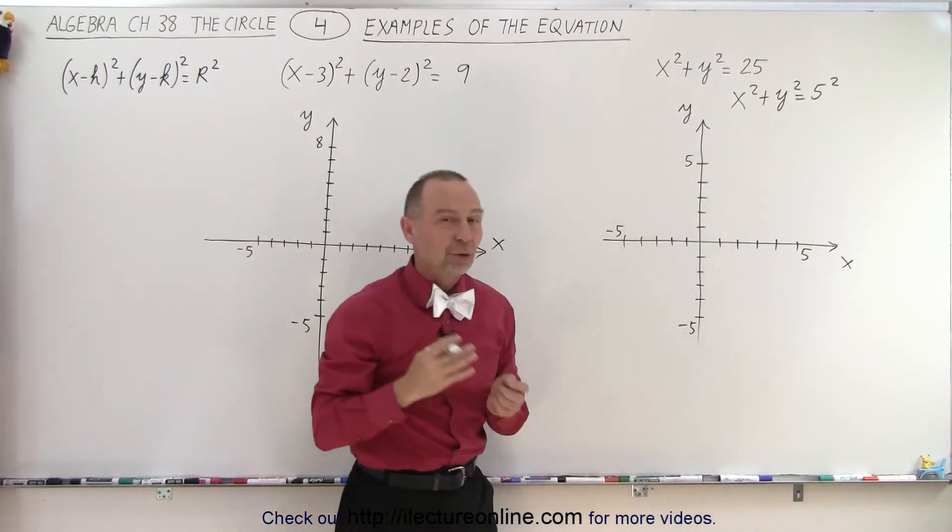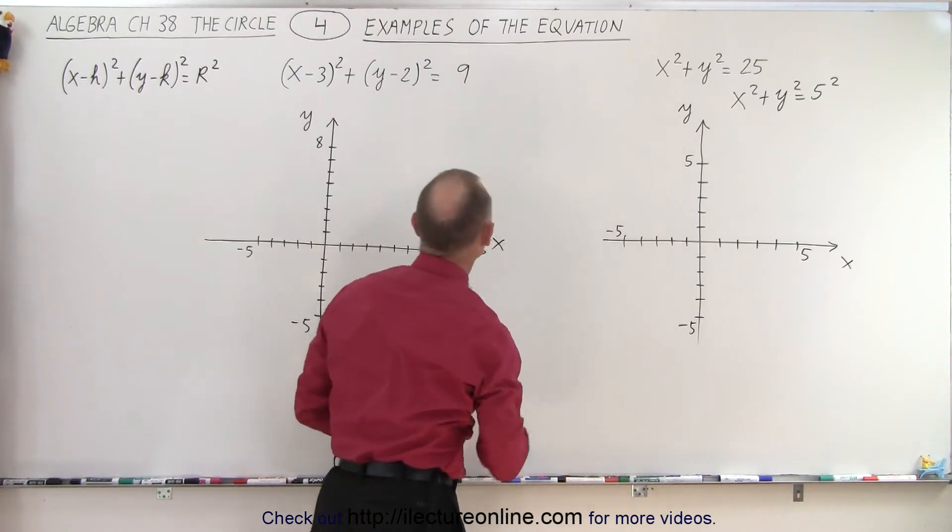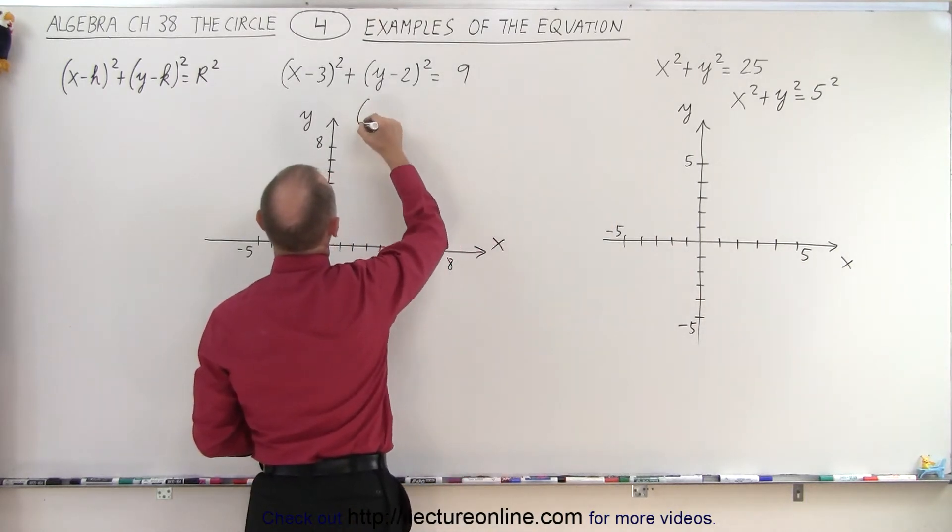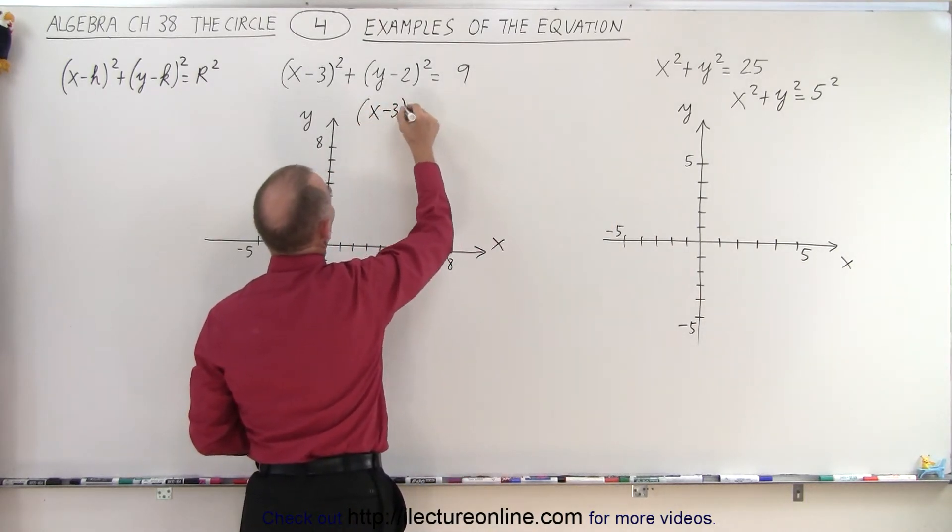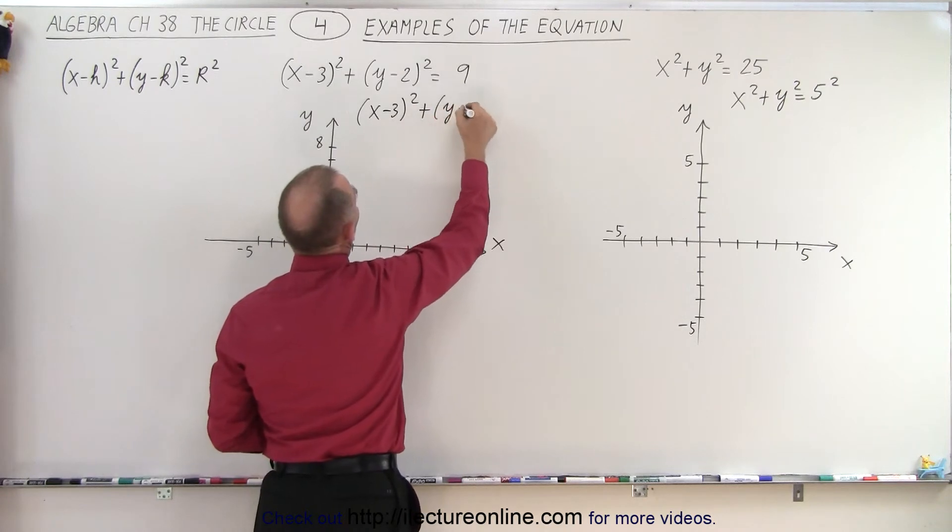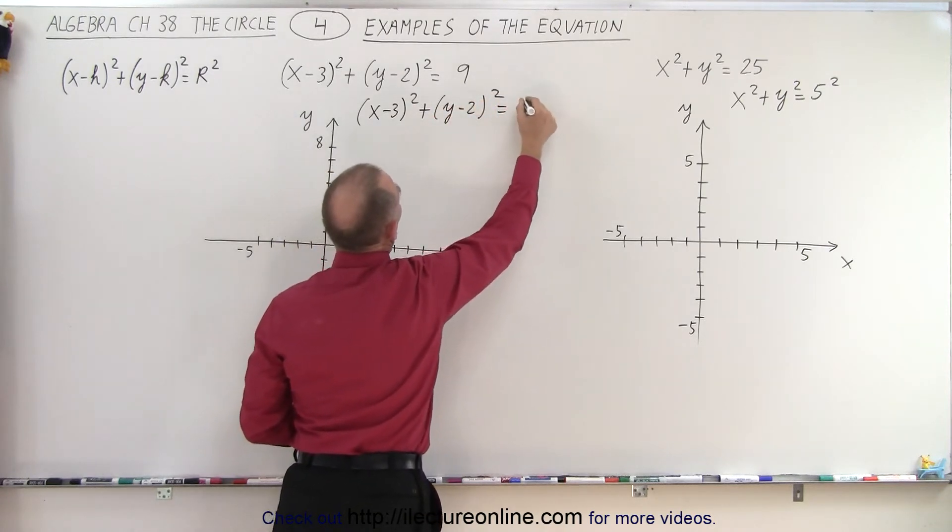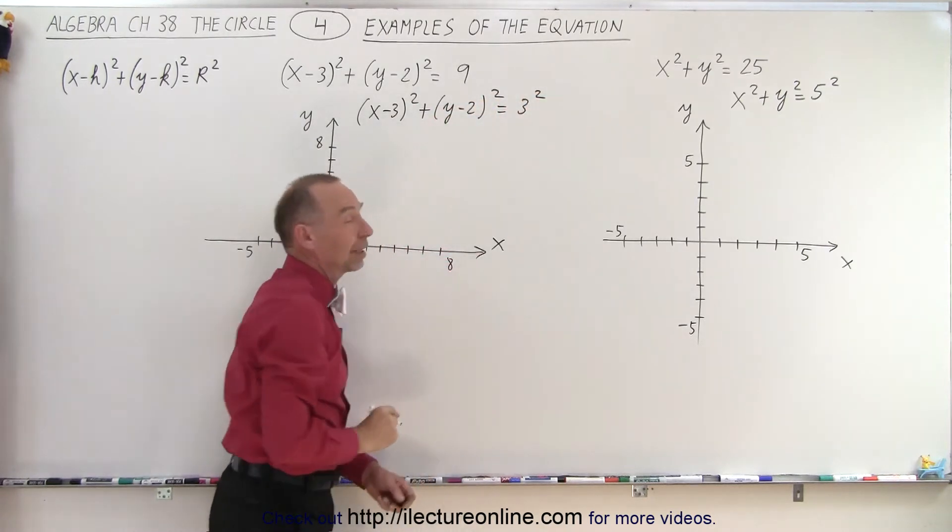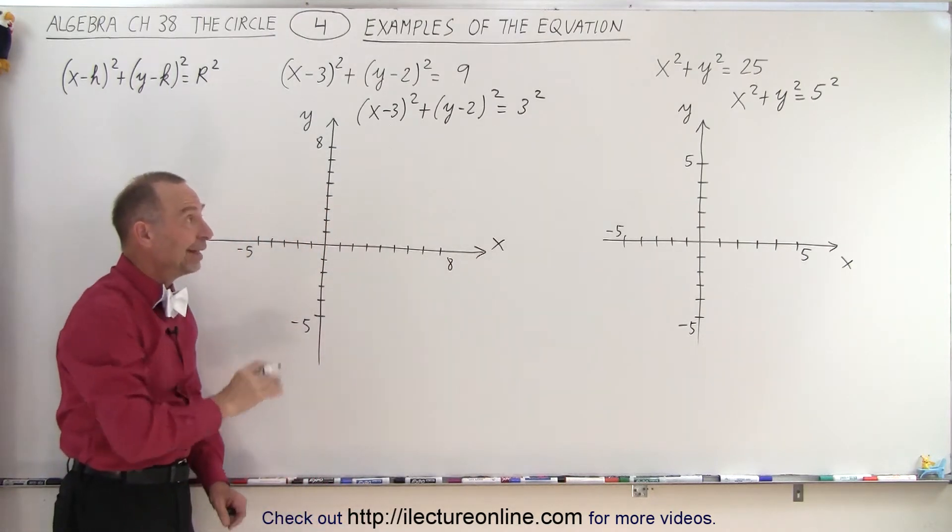Because now you can clearly see that the radius in this case is equal to 5. And over here we can write this equation as x minus 3 squared plus y minus 2 squared is equal to 3 squared. And again, you can clearly see that the radius there is equal to 3.